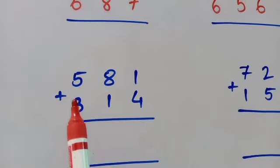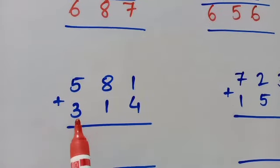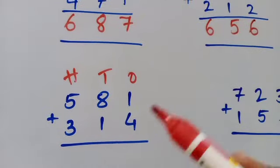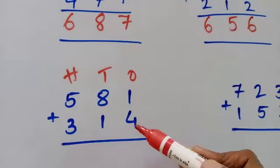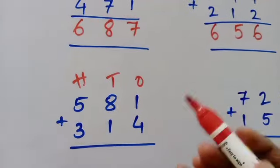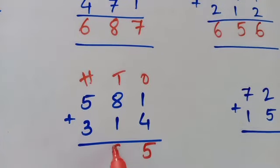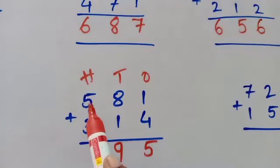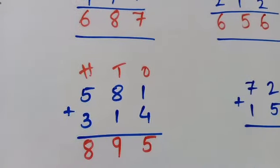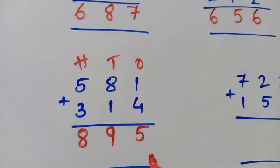The next sum is 581 plus 314. Let's write ones place, tens place, and hundreds place. Now 1 plus 4 — 4 is the big number, 1 is the small number, so 4 should be in your mind, 1 should be in your heart. 4 plus 1 is 5. Write exactly below the number. Next, 8 plus 1 is 9. And 5 plus 3 — 5 should be in your mind, 3 in your heart — so 5 after 6, 7, 8. So 895 is the total answer.